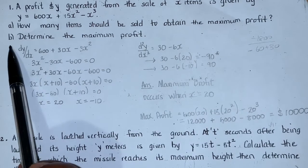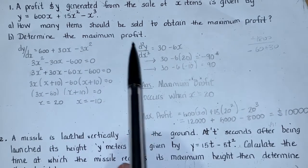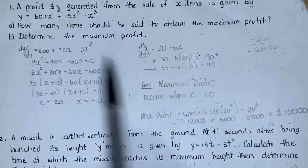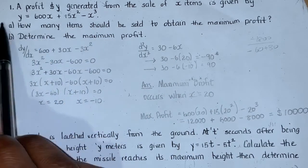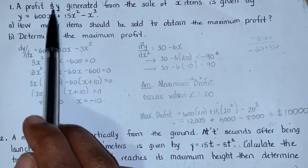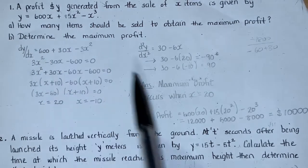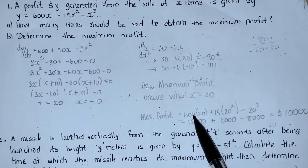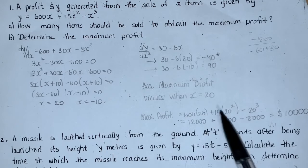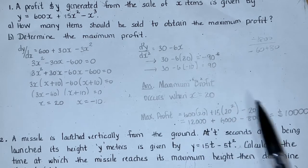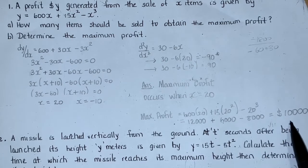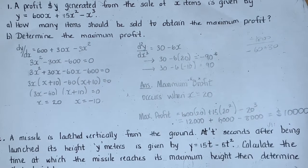Part B wants us to determine that maximum profit. We do that by simply plugging 20 in place of X in our Y function, because Y represents the dollar amount or the profit. When we plug 20 in place of X, we have 600 times 20 plus 15 times 20 squared minus 20 cubed, which works out to $10,000 in profit.